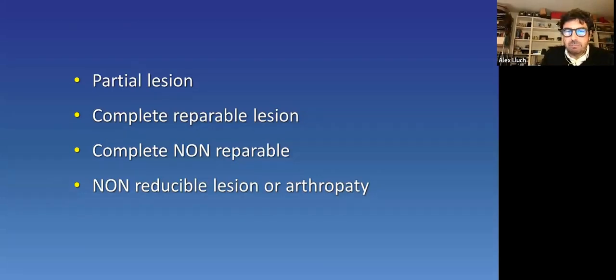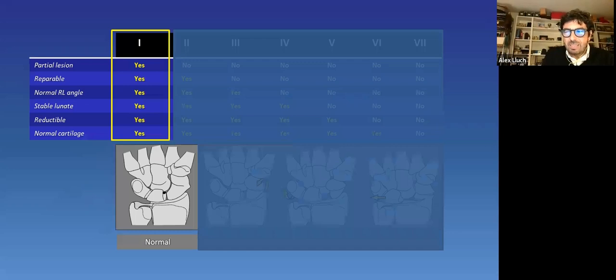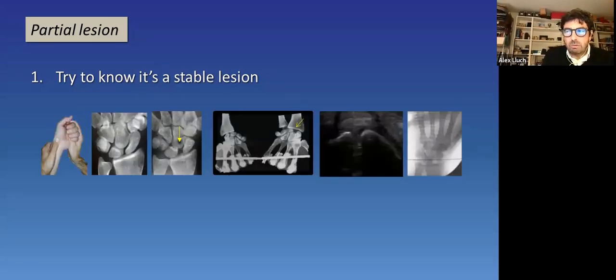A partial lesion. A complete repairable lesion. A complete non-reparable lesion. And a non-reducible lesion or arthropathy. We will start with a partial lesion, which will be placed in this side of the scapholunate lesion spectrum. So, we can have a painful wrist, but not an unstable wrist. In this type of patients, we will have our first step. That will be sure that the patient has only a partial lesion. And for that, we will use all our non-aggressive diagnostic tools.